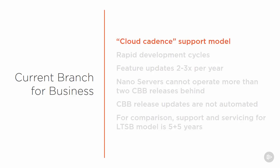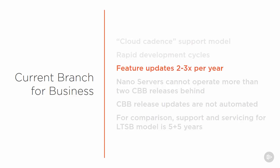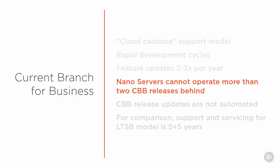Microsoft calls this its Cloud Cadence support model, which refers to the fact that they're doing very rapid development on NanoServer itself. If you implement NanoServers, you are required to keep those instances patched, and Microsoft plans on releasing feature updates roughly two to three times per year. Each NanoServer cannot legally operate more than two CBB releases behind. The delivery of CBB release updates is not automated — you'll have to manually update those instances when releases happen.